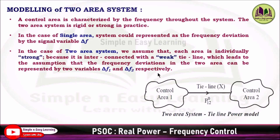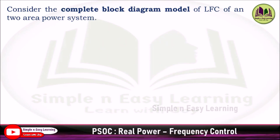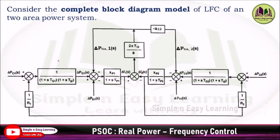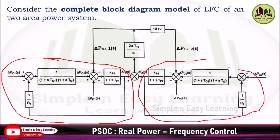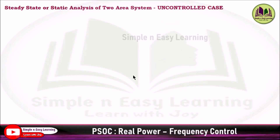The power system can be divided into a number of load frequency control areas interconnected by means of tie lines. The control objective is to regulate the frequency of each area and to regulate the tie-line power as per inter-area contracts. Now we will discuss the steady-state analysis of a two-area system — the uncontrolled case. Consider the complete block diagram model of load frequency control of a two-area power system, where this part is area 1, this part is area 2, and in between there are tie-line power flow blocks.